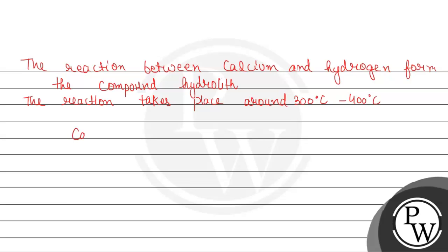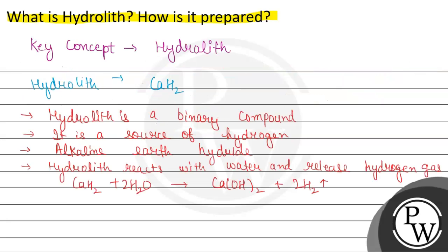The reaction is: calcium plus H₂ (hydrogen), at 300°C to 400°C, gives calcium hydride — that is hydrolith. This was all about the preparation and the complete solution. Hope the solution was understandable. Thank you.